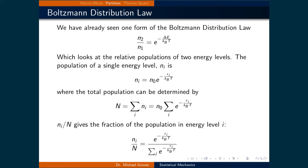ni over n gives the fraction of the population in energy level i, or the probability of being in state i, and can be expressed as ni over n equals e raised to the power of negative ei divided by the Boltzmann constant times the temperature, divided by the sum over i of e raised to the power of negative ei over kbT. Dividing this expression for one energy level by another returns the originally presented form.